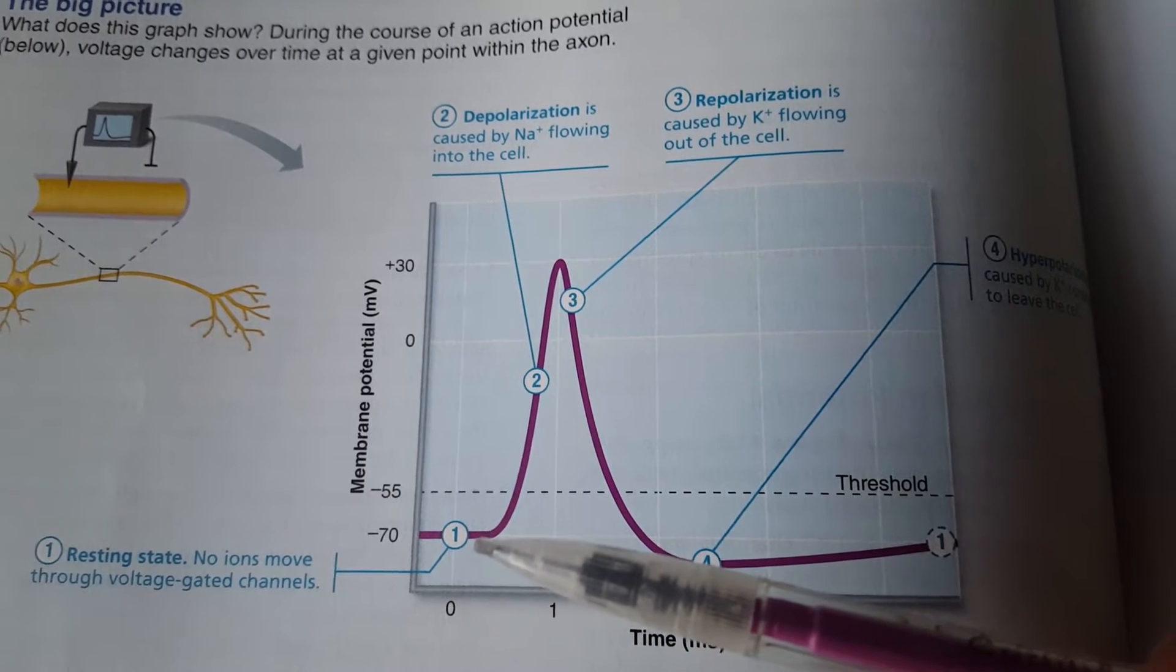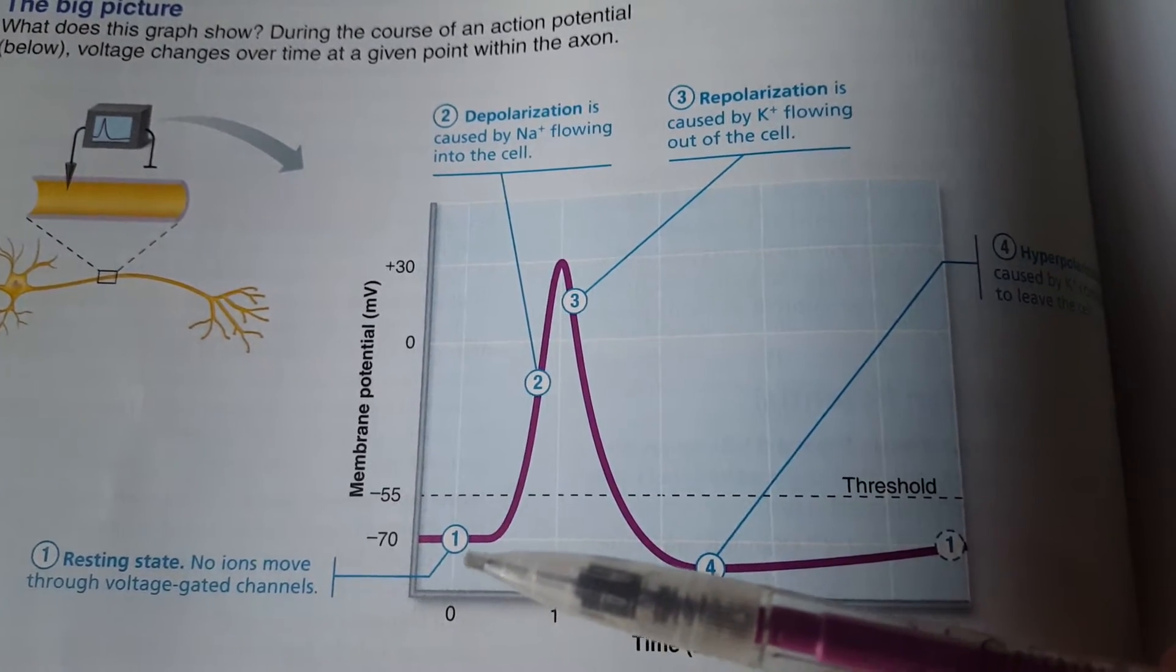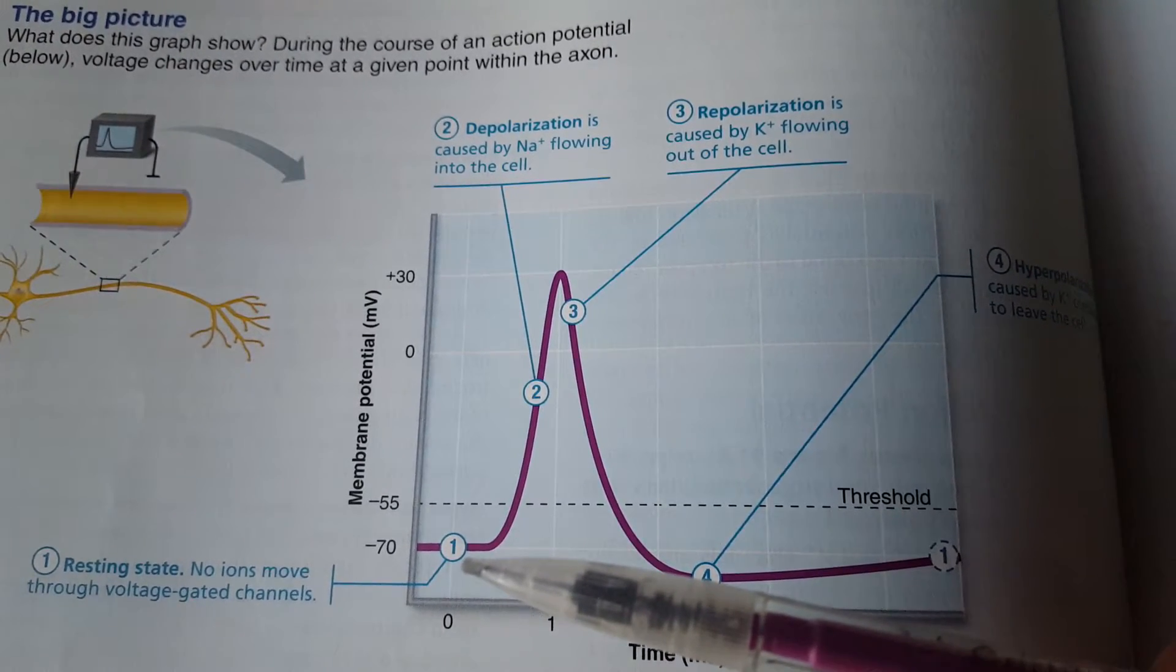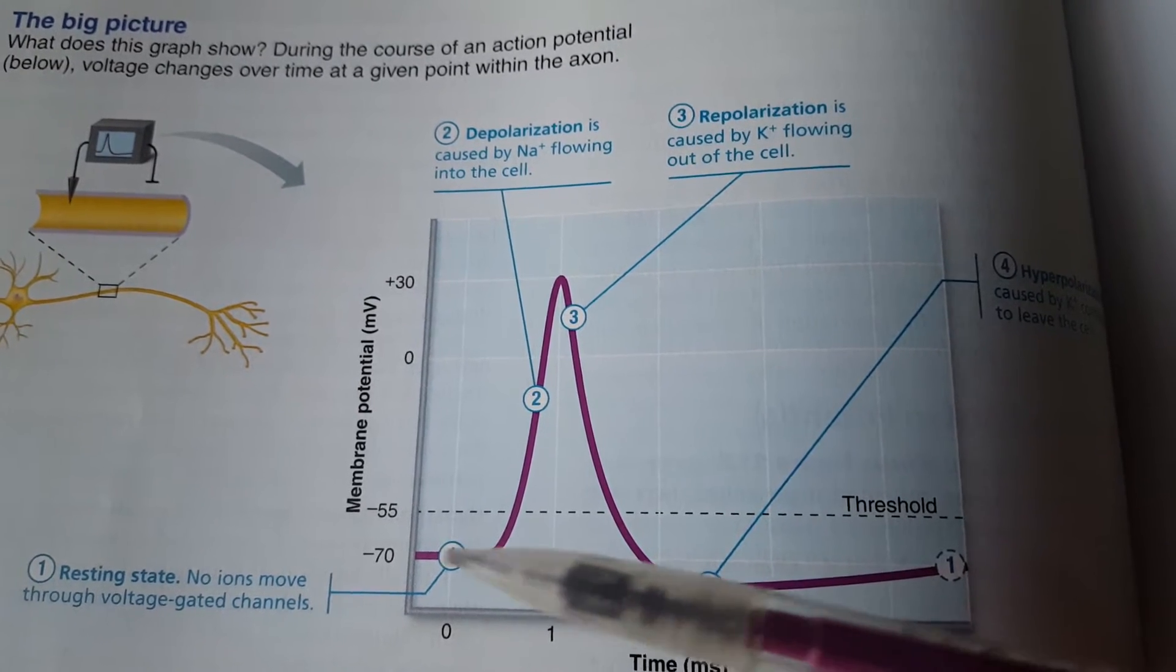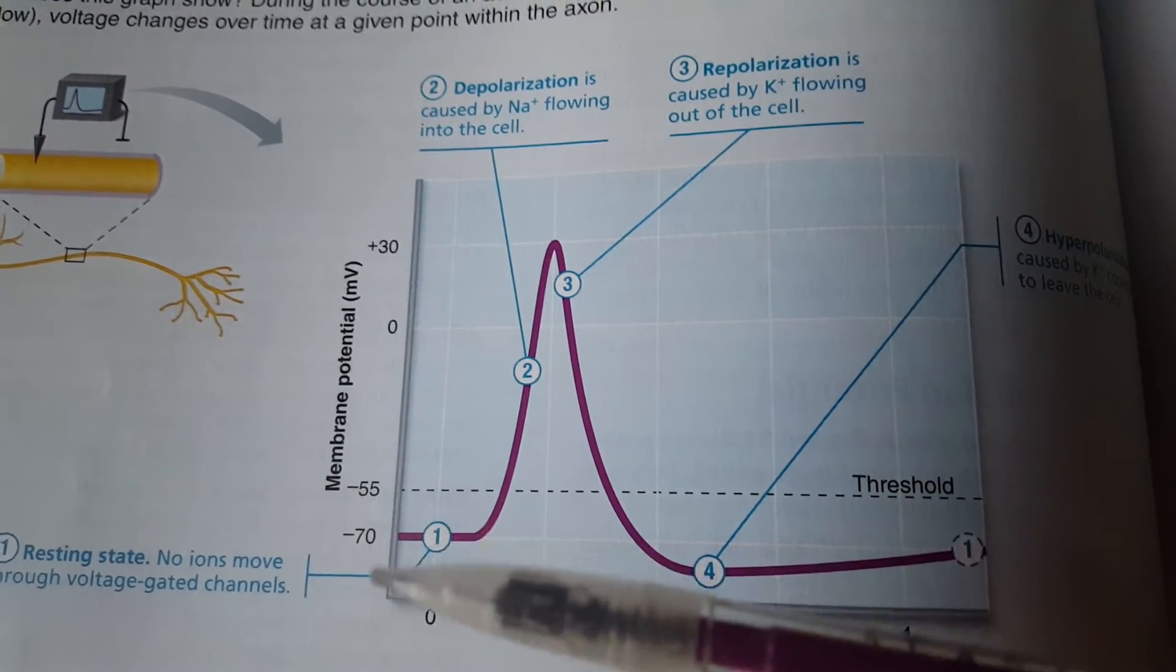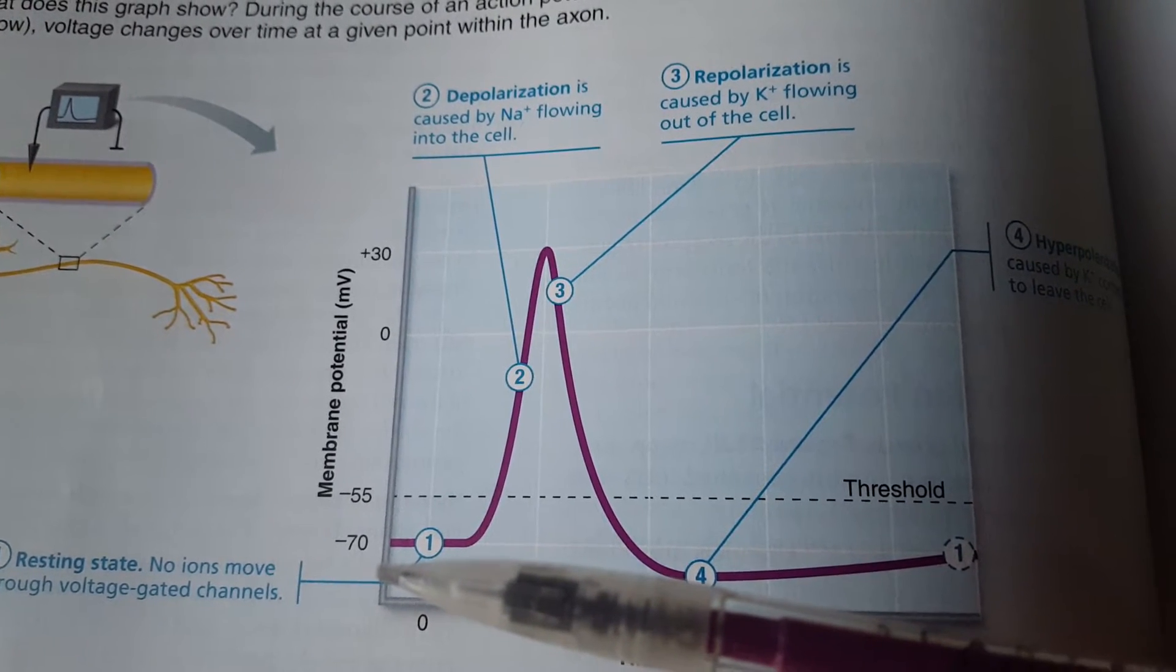We have more potassium on the inside, but relatively speaking we've got more positive charges total on the outside of the membrane versus the number of total positive charges on the inside, so we have a relative negative mV on the inside of the membrane of the cell.